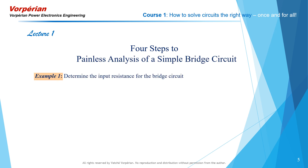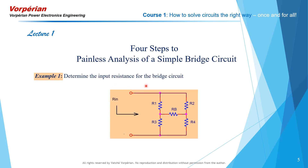We wanted to determine the input resistance for this bridge circuit. You look at it and you cannot determine it by inspection simply because it is a bridge connection. You can't use voltage dividers or Thevenin equivalents or Norton equivalents just because it is a bridge circuit — it's hard to determine by inspection. Any one of these elements here is causing trouble. So let us see how we're going to crack this down.